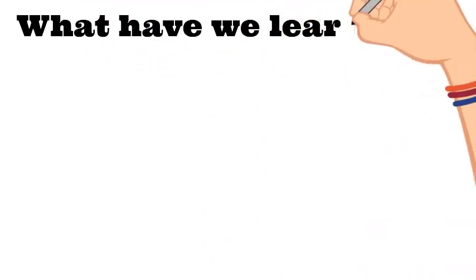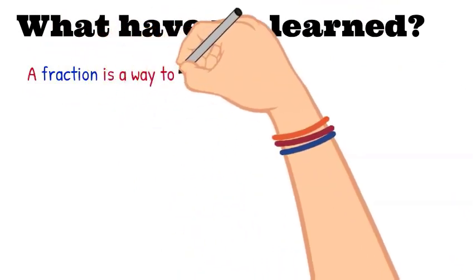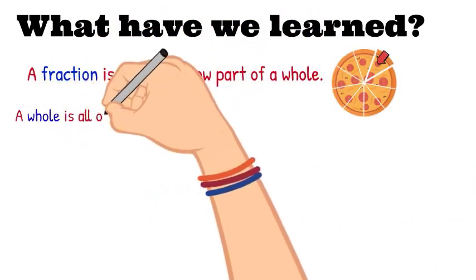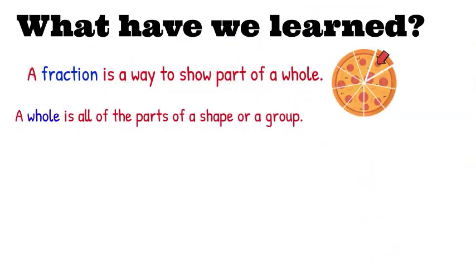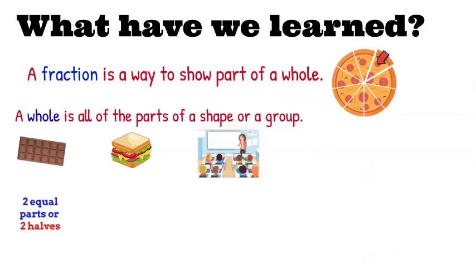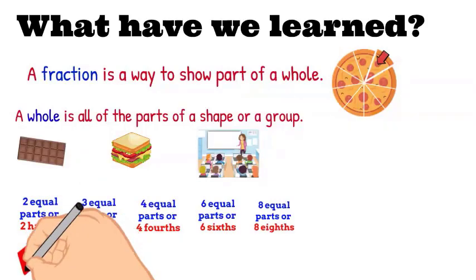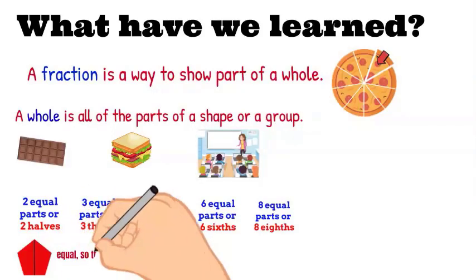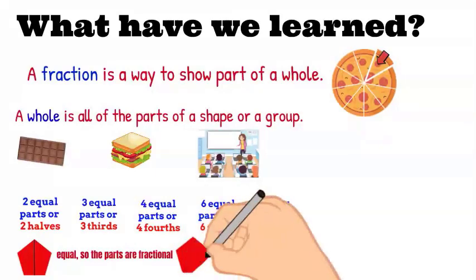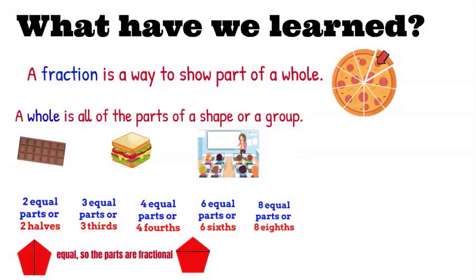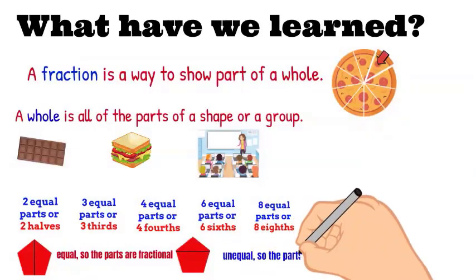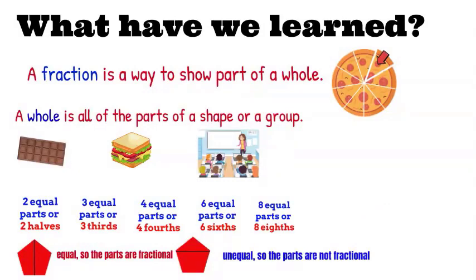Let's consider what we've learned today. A fraction is a way to show part of a whole, like a slice of pizza. A whole is all of the parts of a shape or a group — a whole chocolate bar, a whole sandwich, a whole classroom. Two halves, three thirds, four fourths, six sixths, and eight eighths are all equal parts. Parts can be equal or unequal. Equal parts are fractional; unequal parts are not fractional and we won't consider them a fraction. This is the end of your lesson — I hope you learned a lot, and I will see you in the next video.